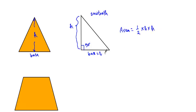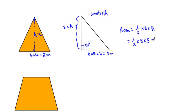For example, if the base is 8 meters and the height is 5 meters, the area of this triangle will be equal to half times base times height, which equals 20 square meters. That means this triangle will occupy an area of 20 square meters.